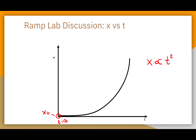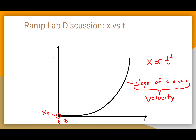One thing we know about this type of graph: the slope of a position versus time graph tells us the velocity of the object. In this case we have quite a few different slopes, so we need to analyze this graph and explain that changing slope and therefore that changing velocity.